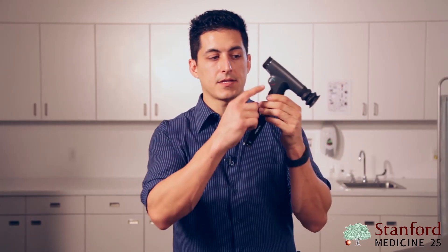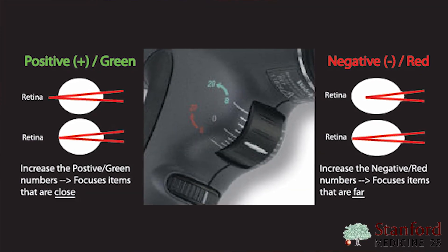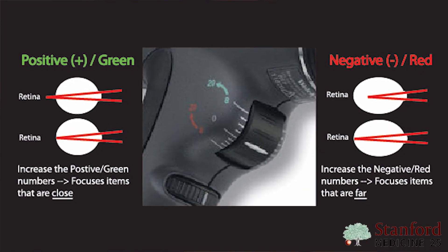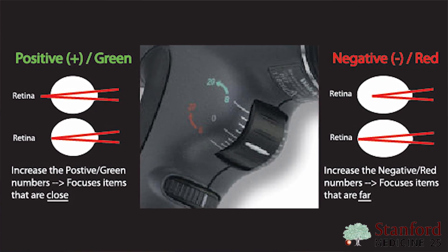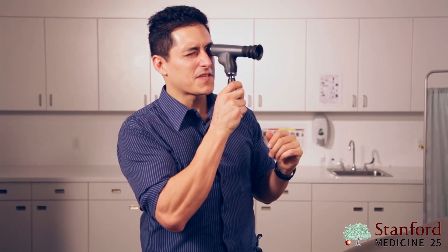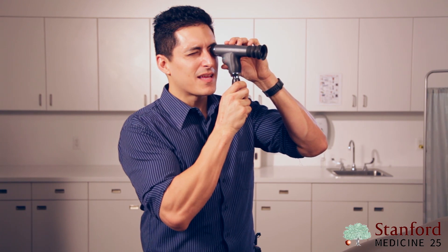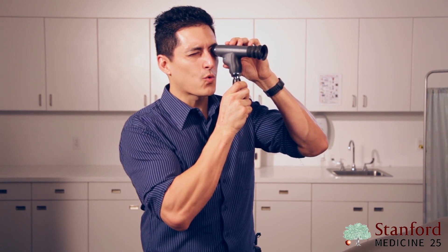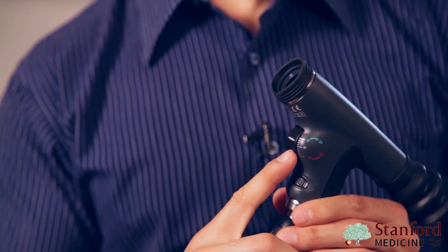The third and final setting to know about the panoptic is these numbers, which allow you to focus if you or your patient are too nearsighted or too farsighted. This setting can actually be used to figure out your prescription — just look through the scope at something about 10 to 15 feet away and move the knob until it comes into focus. If it focuses toward the red setting, that's your prescription in diopters for someone who is nearsighted.